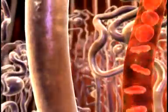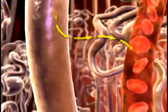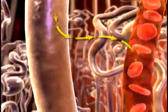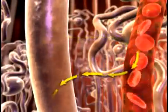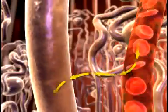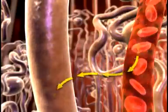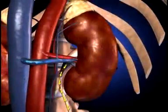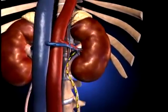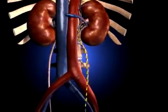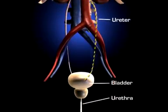Through tubular reabsorption, electrolytes and nutrients move from the filtrate back into the bloodstream. Through tubular secretion, substances move from the peritubular capillaries into the urine filtrate. The filtrate concentrates in the collecting tubules, then finds its way to the renal pelvis, where it is directed to the ureter, the bladder, and the urethra for elimination.